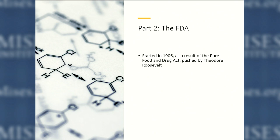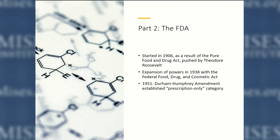The FDA started in 1906 as part of the Pure Food and Drug Act, pushed by Theodore Roosevelt. The FDA gained power over the years as many federal bureaucracies do. In 1938, there was the Federal Food, Drug, and Cosmetic Act. In 1951, amendments established a prescription-only category. In 1962, more amendments gave the FDA the power not only to check the safety of a drug but also its efficacy — so then they're trying to decide whether it works.